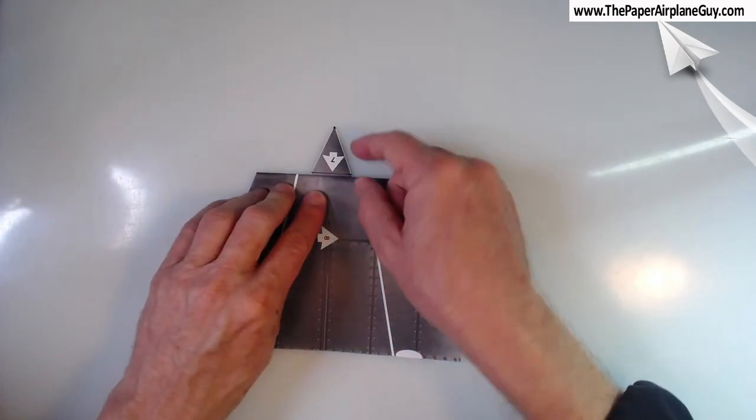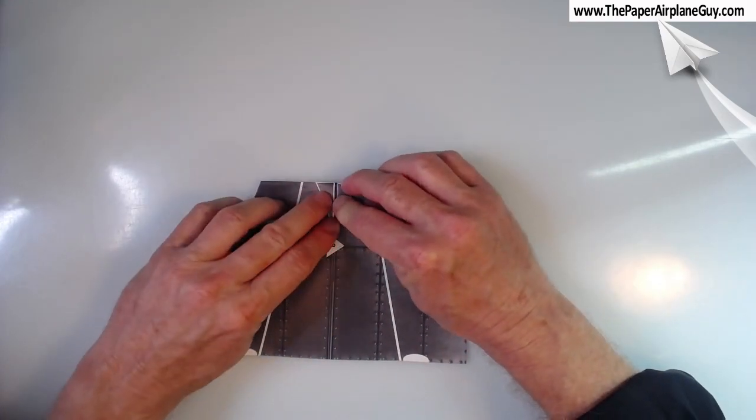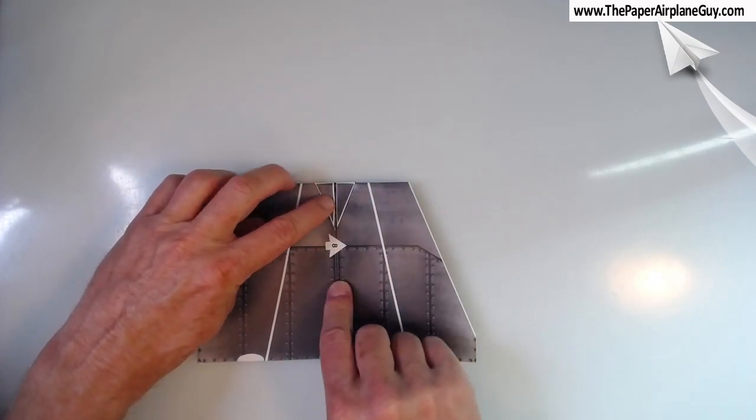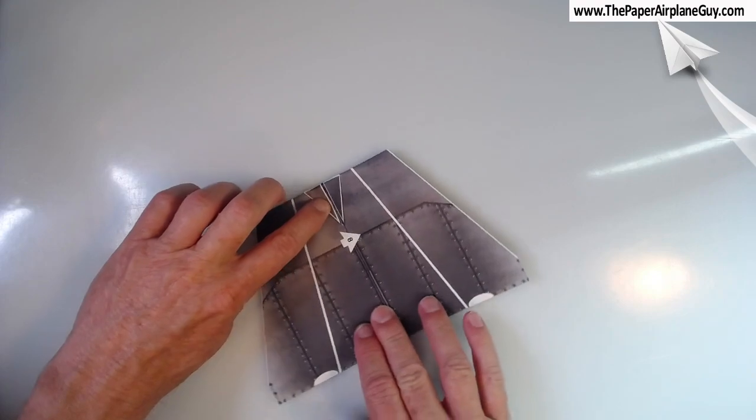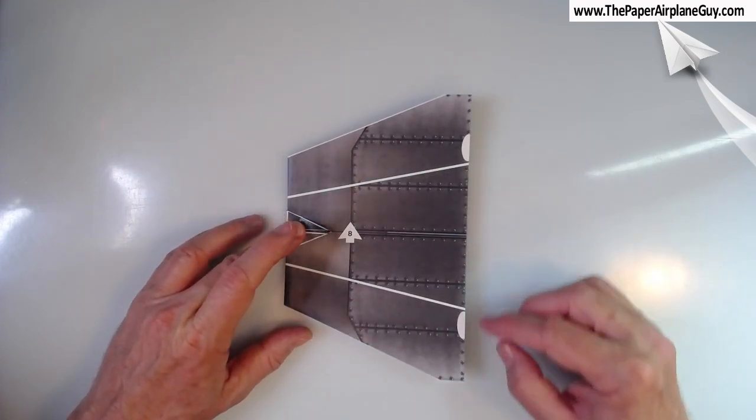And sure enough, there's fold number seven. It's going to come over this way. And that gets us ready to make fold number eight, which is going to be right down the center. Here's fold number eight. So I'm going to swing this around just to make the folding just a little bit easier to get to number eight. That's going to write down the center.